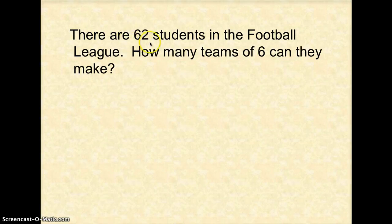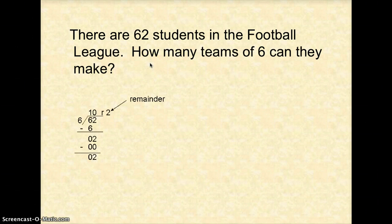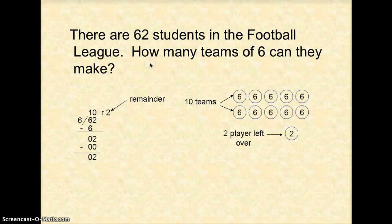Let's look at this one. There are 62 students in the football league. How many teams of 6 can they make? So we want to know how many groups of 6. So we do 62 divided by 6. 6 will go into 6 one time. 6 times 1 is 6. Subtract, get 0, bring down the 2. And 6 cannot go into 2, so it goes in there 0 times, which leaves you a remainder of 2. But the question wants to know how many teams of 6 can be made.